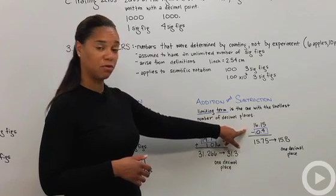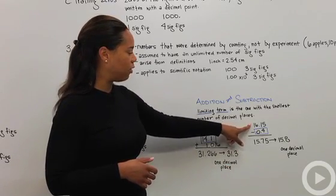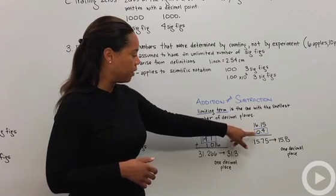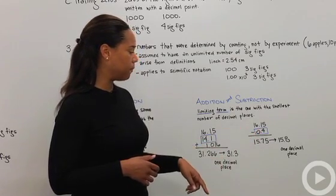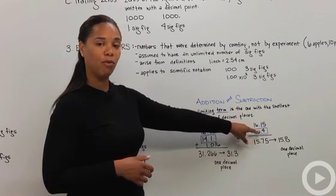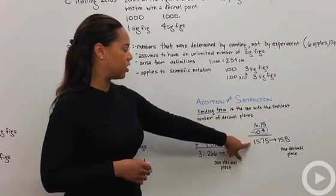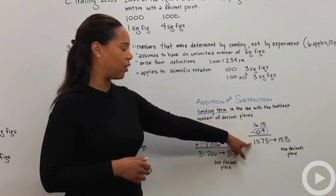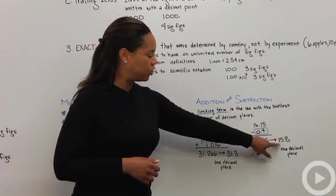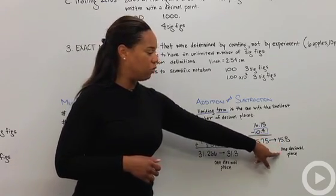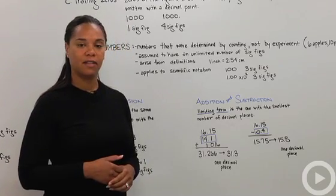Same thing for subtraction. If I had 16.15 subtracted by, and I'm subtracting 0.4, my limiting term is going to be 0.4. Again, I'm limited to one decimal place in my answer. So my answer on the calculator would be 15.75, which I would round to 15.8 having one decimal place. And that's significant figures.